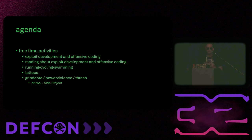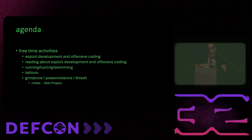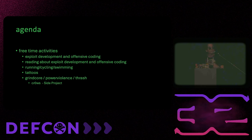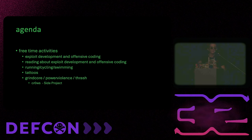For free time activities, I do like to read a lot — basically if my head is not in a book, it's in another book. I like to practice my offensive coding skills, things like AV bypasses, AMZ bypasses, things you'll actually be using in the field. I read constantly, and to blow off stress: a lot of cycling, running, swimming, because I like to break into buildings, so the better I take care of myself, the more I can keep doing this as a profession. I also like to get tattoos — it puts me to sleep — and I am a fan of very fast, loud music.